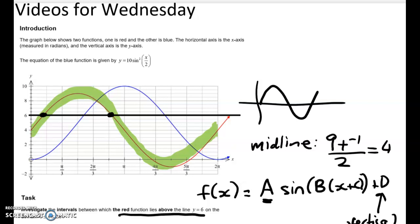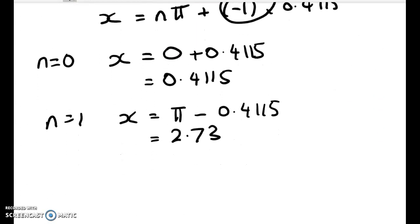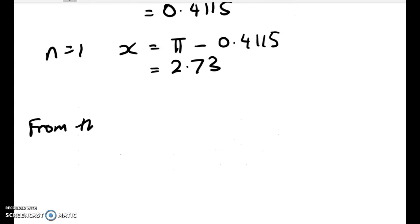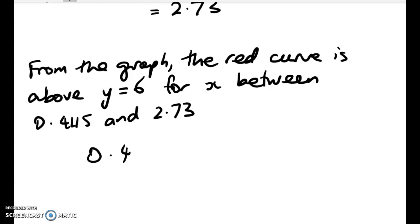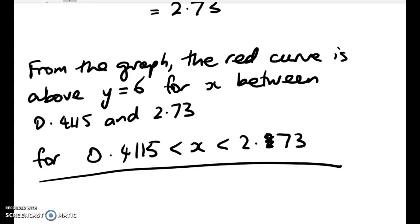So we need to now take those two values and write them into an interval and answer the first part of the problem in context. Right, so from the graph, the red curve or the function is above y equals 6 for x between 0.4115 and 2.73. Or you could say 0.4115 is less than x is less than 2.73. Okay, so that's the first part done.